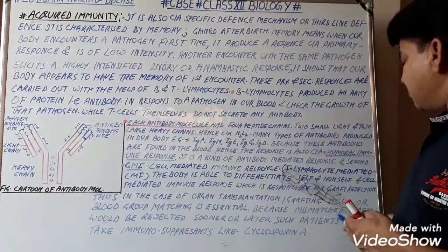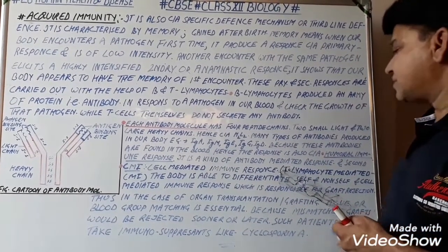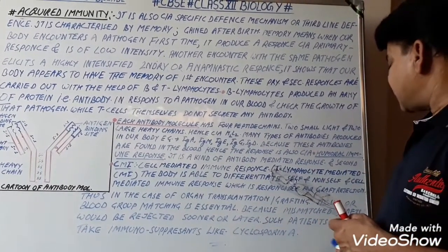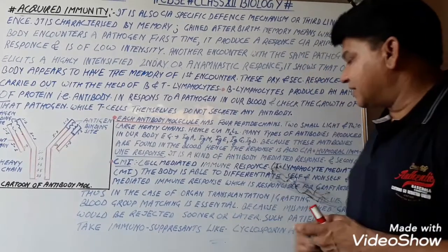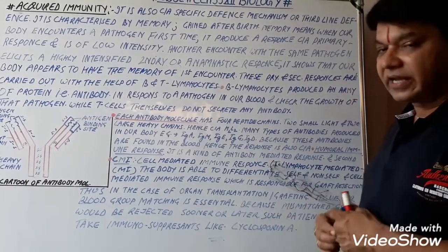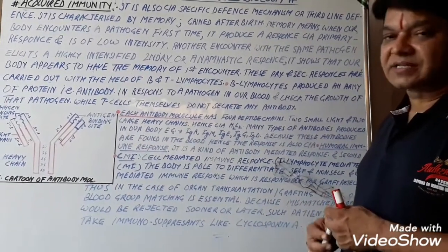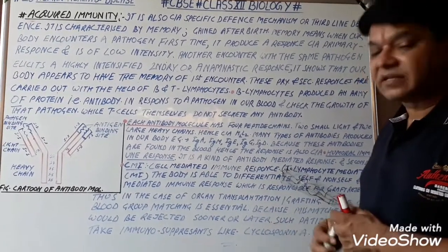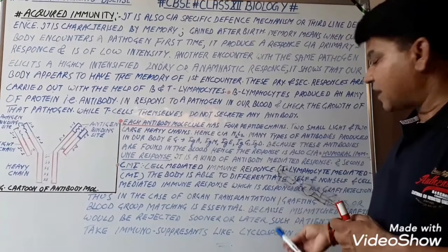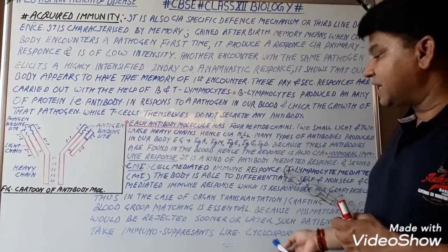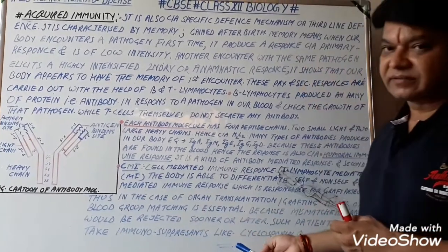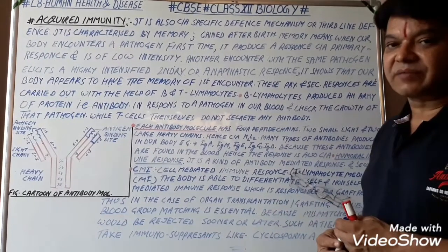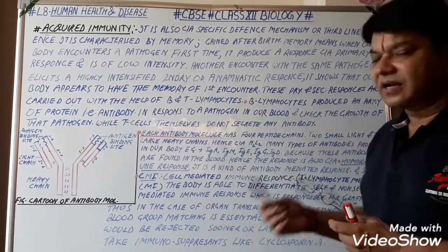Because mismatched grafts would be rejected sooner or later, such patients have to take immunosuppressants. One such immunosuppressant is Cyclosporin A, which functions to suppress the immune response and help in graft and organ transplantation. This is all about acquired immunity.